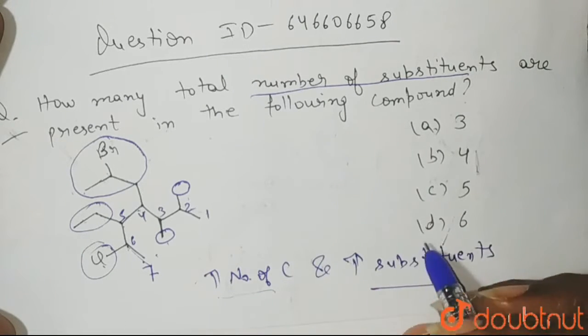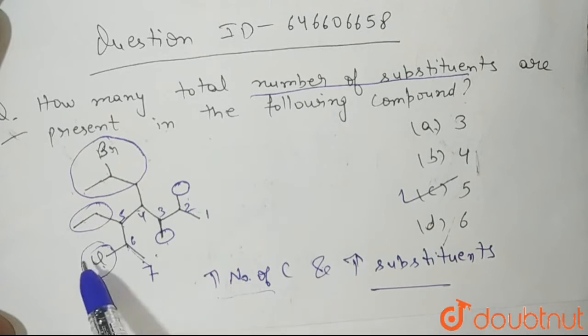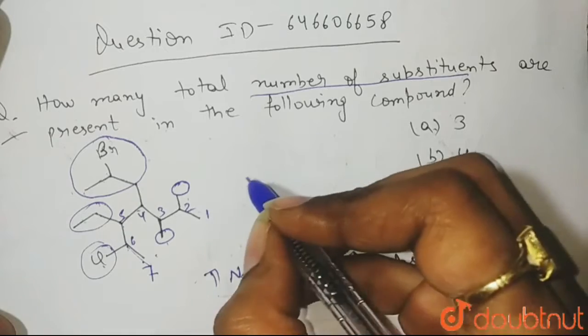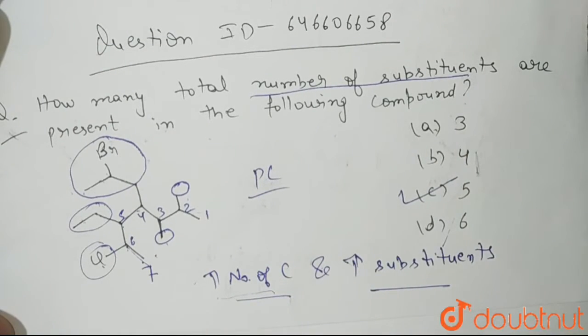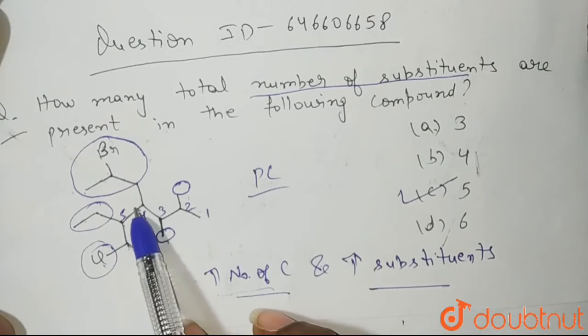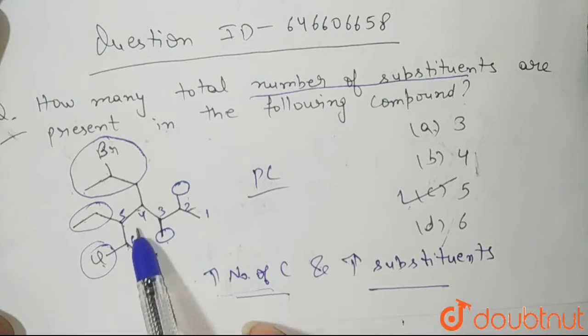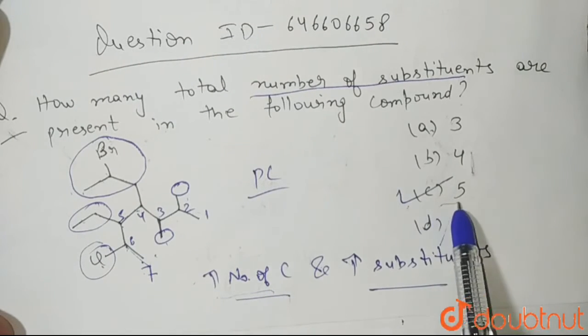So that's why your correct answer is C, that is 5. If you take any other parent chain you will find that less number of substituents are coming in it. We only take that chain as the parent chain which has highest number of carbon atoms and highest number of substituents. And because this chain has 5 number of substituents which is the highest number, so that's why this is our main parent chain and how many number of substituents that are coming in this chain are 5.